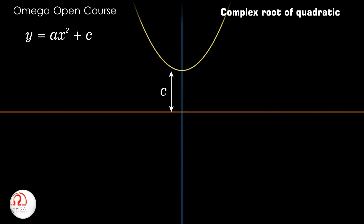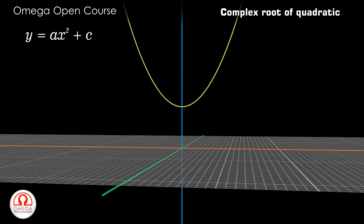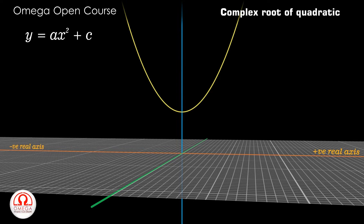To find the complex root, we will have to move to three dimensions. The original x-axis in which we drew the graph is our real axis, with positive direction towards the right and negative towards the left. The axis perpendicular to both the x-axis and y-axis is the imaginary axis, with positive direction away from you and negative direction towards you.